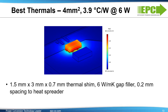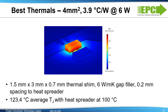In this improved case, we've added a 1.5 mm x 3 mm x 0.7 mm shim, which is just like having another component close to the power FET as you would have in a half bridge. In addition, we use a 6 Watt per meter Kelvin gap filler and 0.2 mm spacing from the top of the device to the heat spreader. The maximum temperature rise is 125 degrees C with the heat spreader held at 100 degrees C. By simply using smaller spacing with the heat sink, adding a more efficient thermal compound, along with other components in close proximity, a significant improvement in thermals can be achieved.